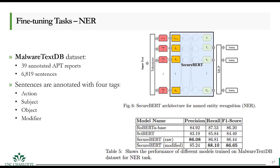There are a limited number of datasets to evaluate cybersecurity language models. MalvertexDB is a dataset containing 39 annotated APT reports comprising 6,819 sentences where action, subject, object, and modifier have been annotated. We fine-tuned SecureBERT along with pre-trained RoBERTa and CyBERT for Named Entity Recognition on this dataset as a downstream task. Despite the fact that this dataset does not necessarily annotate cybersecurity-specific entities, SecureBERT slightly outperformed other models in predicting the correct entity in each sentence.